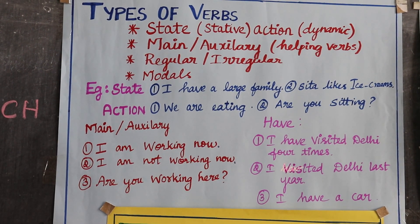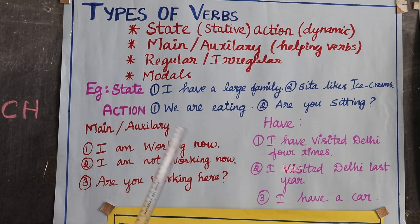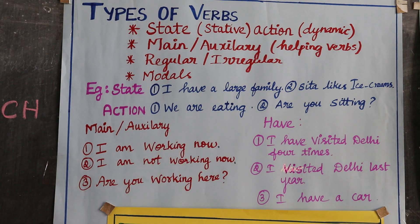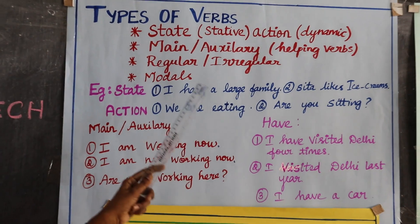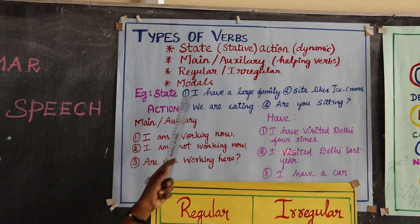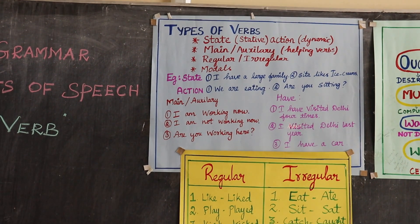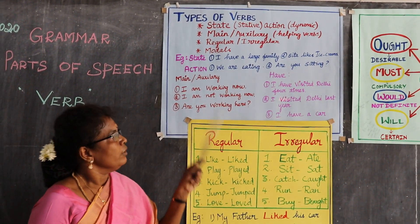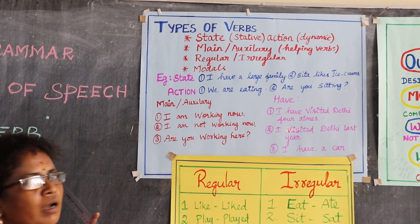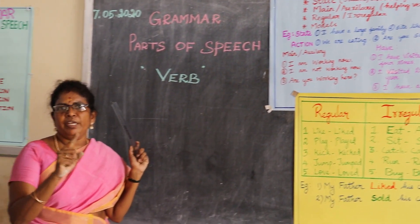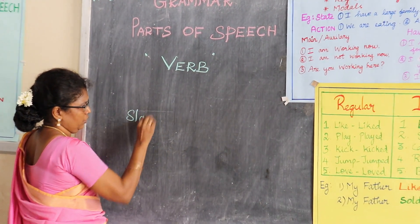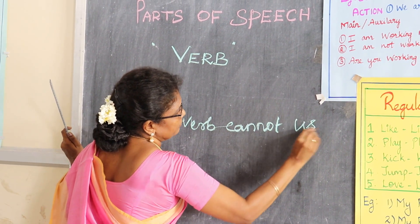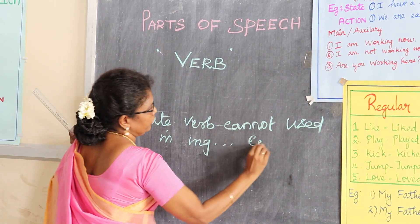Action verbs involve physical activity, like 'go.' Here are examples: 'I have a large family' and 'Sita likes ice cream.' What is the difference? Have is a state word — not a physical activity. Sita is not doing any physical activity with 'likes'; it just gives information. One more thing: state verbs cannot be used in the ING form — that is, the continuous form.